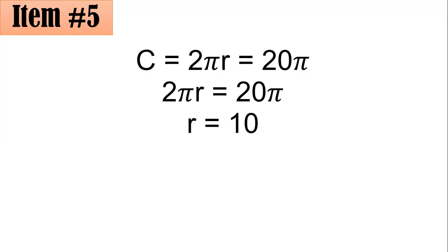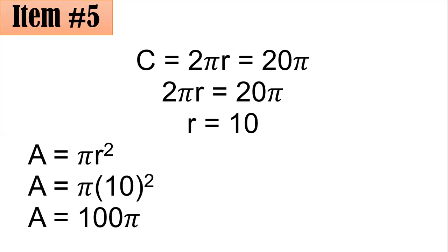And since the radius is 10 now, and the formula for the area of a circle is pi r squared, by substitution, you will have a is equal to pi times 10 squared. 10 squared is 100. And therefore, the area of the circle is 100 pi square units. Letter C.